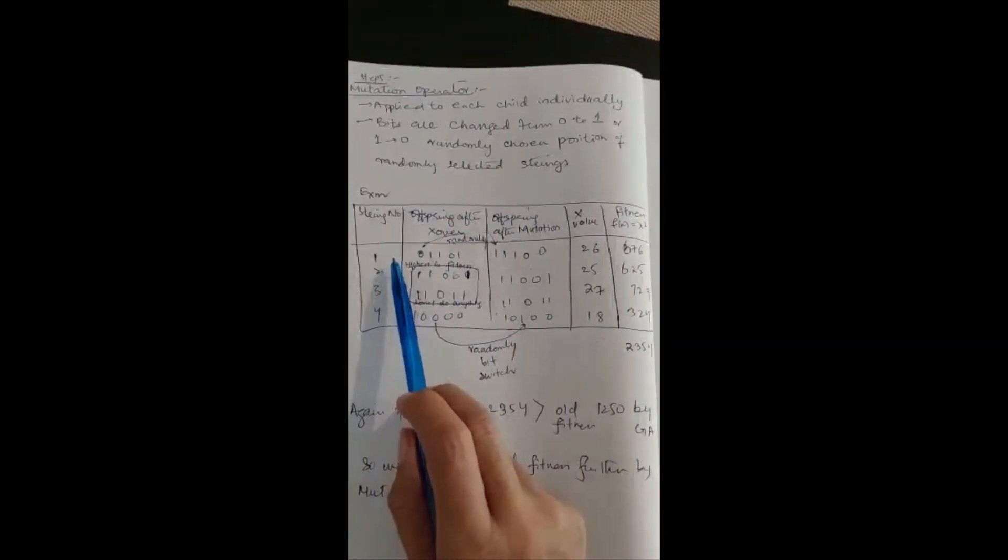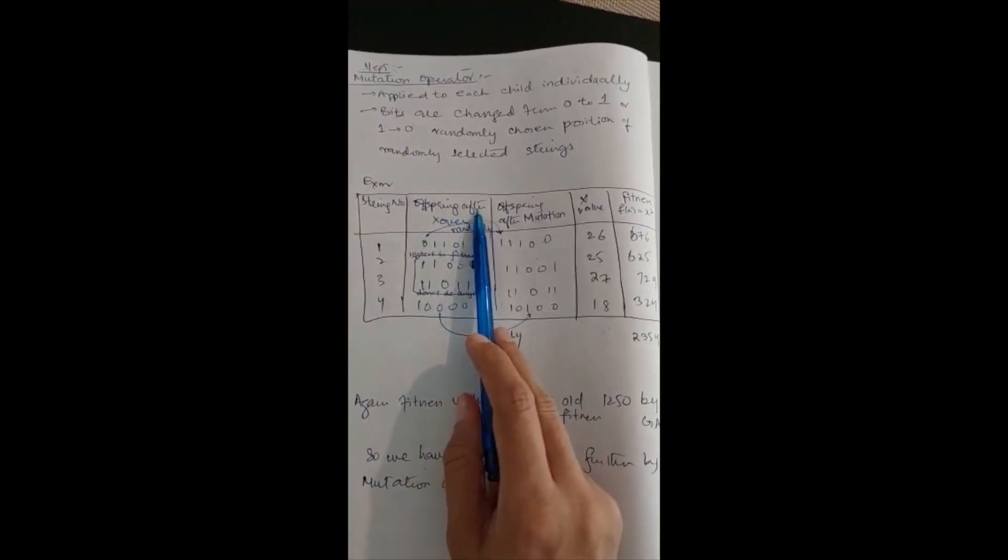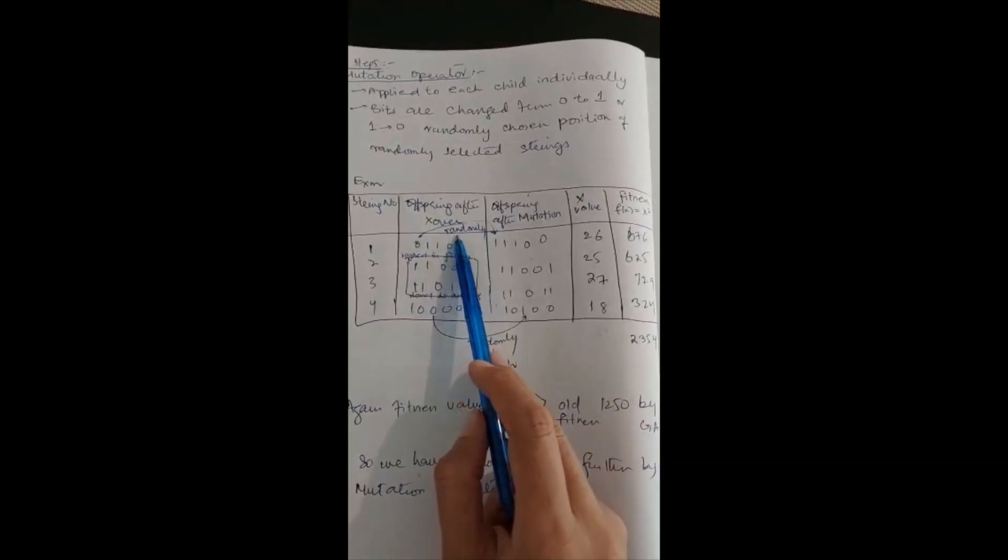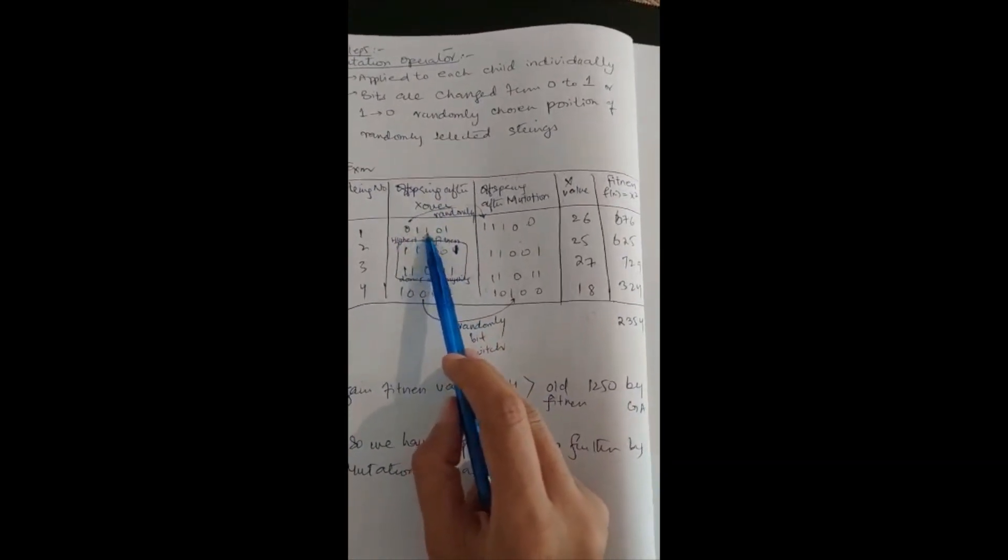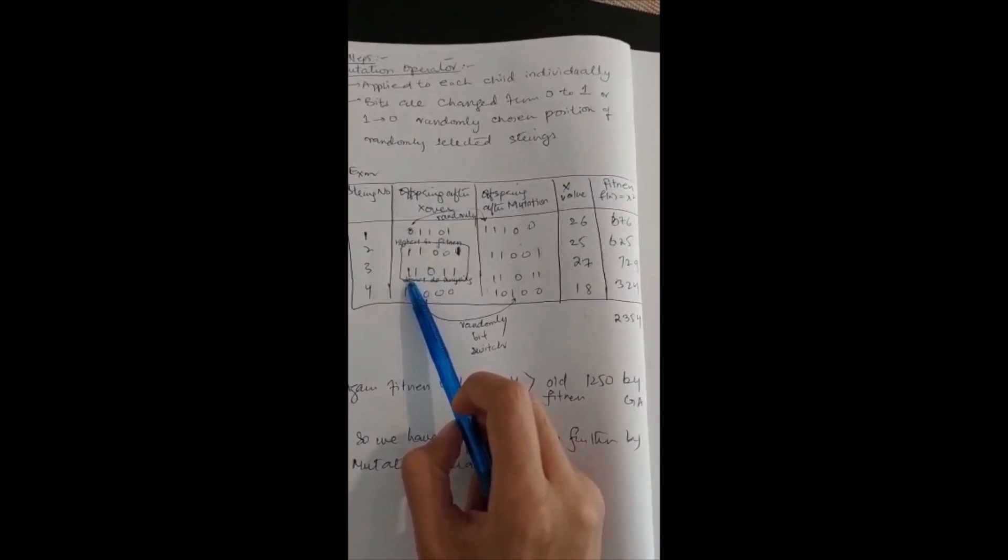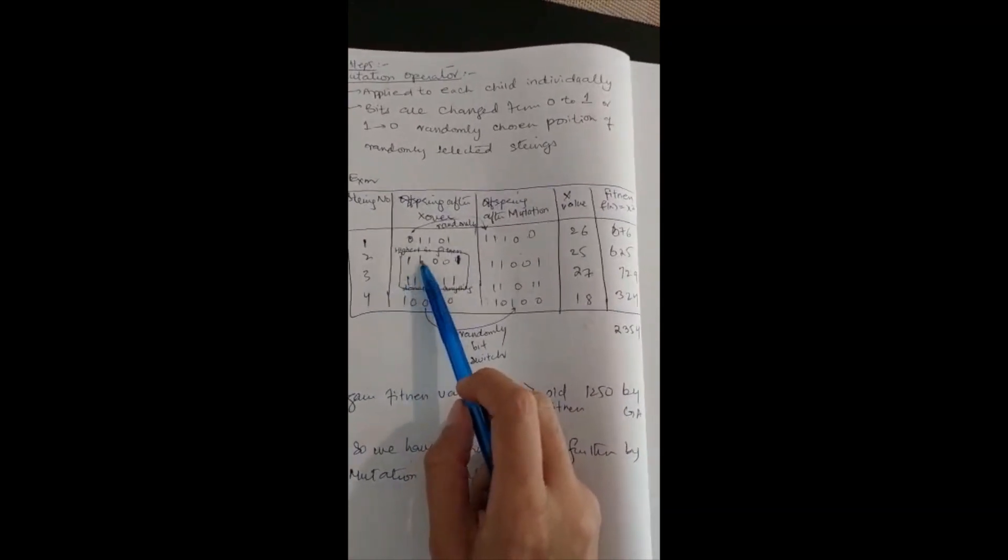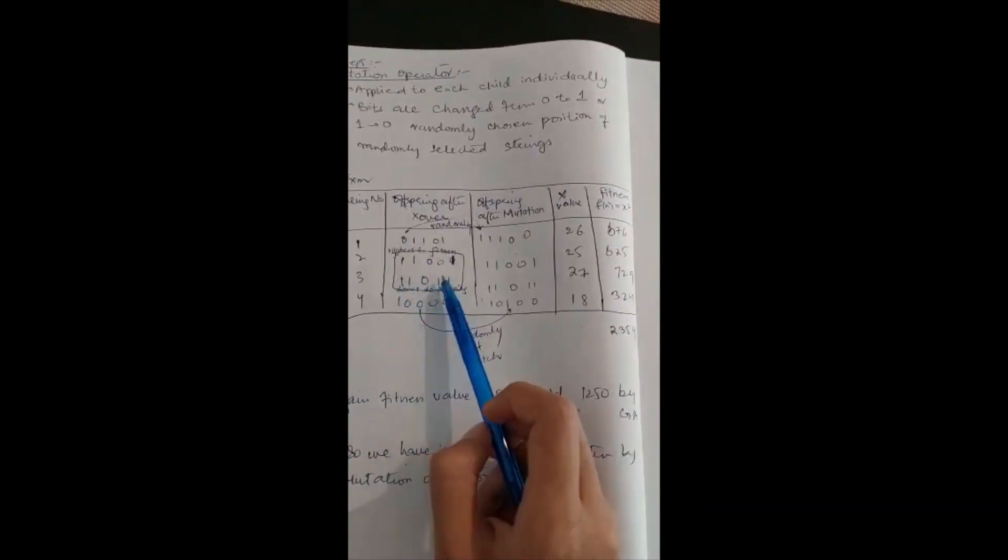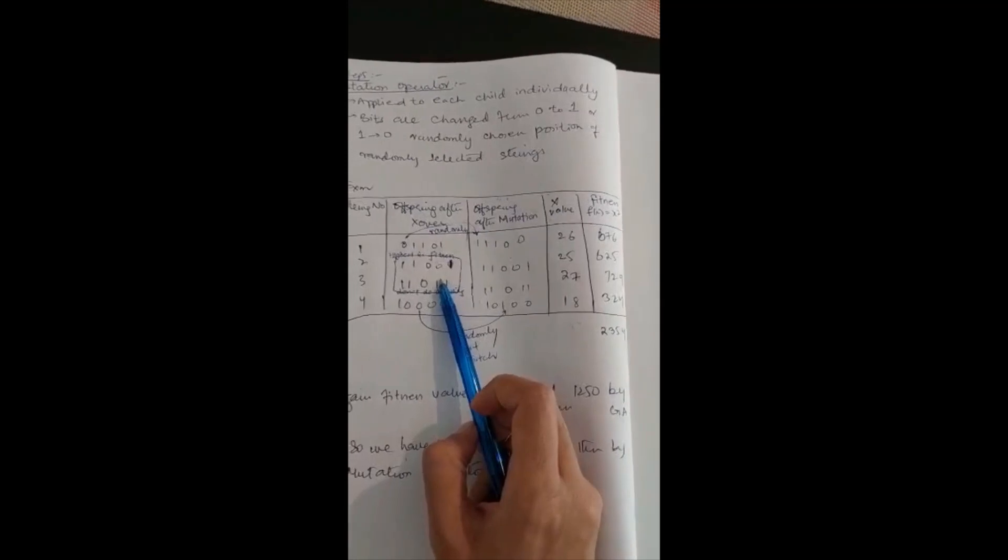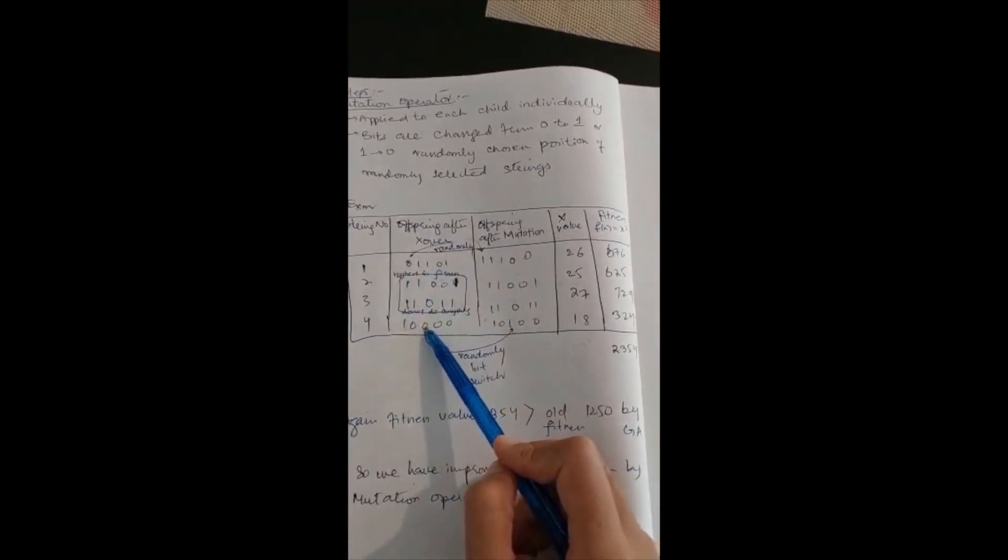What I have done here? There are strings 1, 2, 3, and 4, which are your offsprings after crossover. These two are highest in fitness. Now I have randomly chosen that I am not mutating the one which has highest fitness. I am mutating the first and fourth string. These are after crossover.